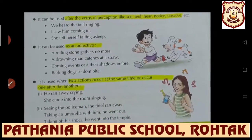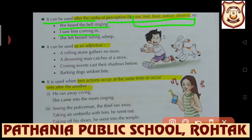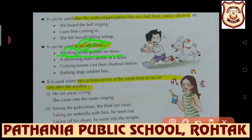The present participle can be used after verbs of perception like 'see', 'hear', 'notice', 'observe', etc. 'We heard the bell ringing', 'I saw him coming.' With these verbs of perception, present participle forms are used. It can also be used as an adjective: 'A rolling stone gathers no moss' - 'rolling' is describing 'stone', so it is used as an adjective.